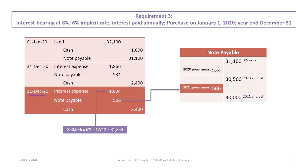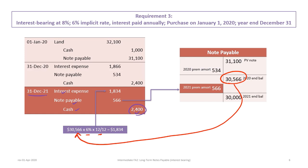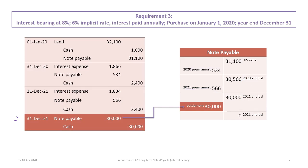Moving to December 31st, 2021, just prior to maturity, we record a debit to interest expense, a debit to note payable, and a credit to cash. Cash is again $2,400. Interest expense is now based on the 2020 ending balance of $30,566 times six percent for a full year, giving $1,834. The difference — $2,400 minus $1,834 — is $566, the 2021 premium amortization. The note payable balance is now exactly $30,000. We then record the settlement: debit note payable and credit cash for $30,000 each, and the note is gone.